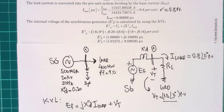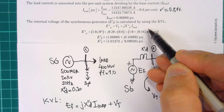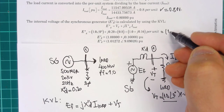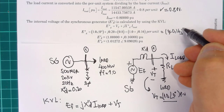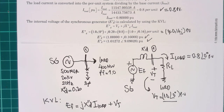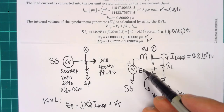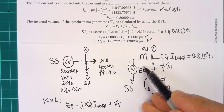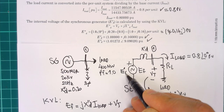Putting the numbers together: E'' = j0.2 × 0.8 + 1∠0°, which numerically equals 1 + j0.16 per unit. Now we know the internal voltage of the generator.